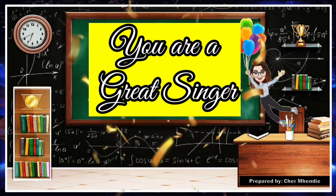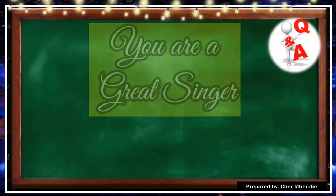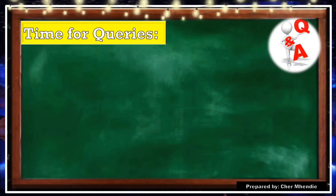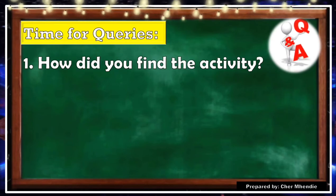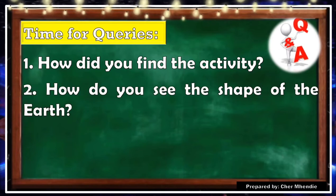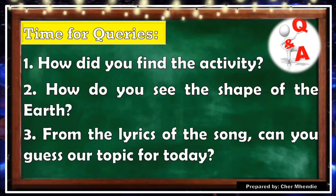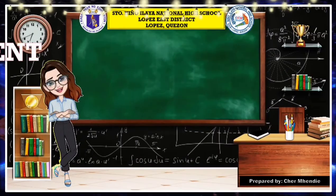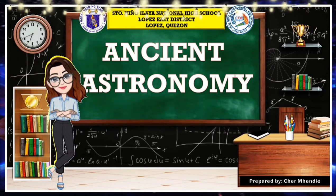Excellent! You are a great singer! Now, my dear students, let's have a little time for queries. How did you find the activity? Yes, it is easy and very exciting. How do you see the shape of the Earth? Yes — circle, sphere. Very good! From the lyrics of the song, can you guess our topic for today? You got it right, class — it is all about ancient astronomy!